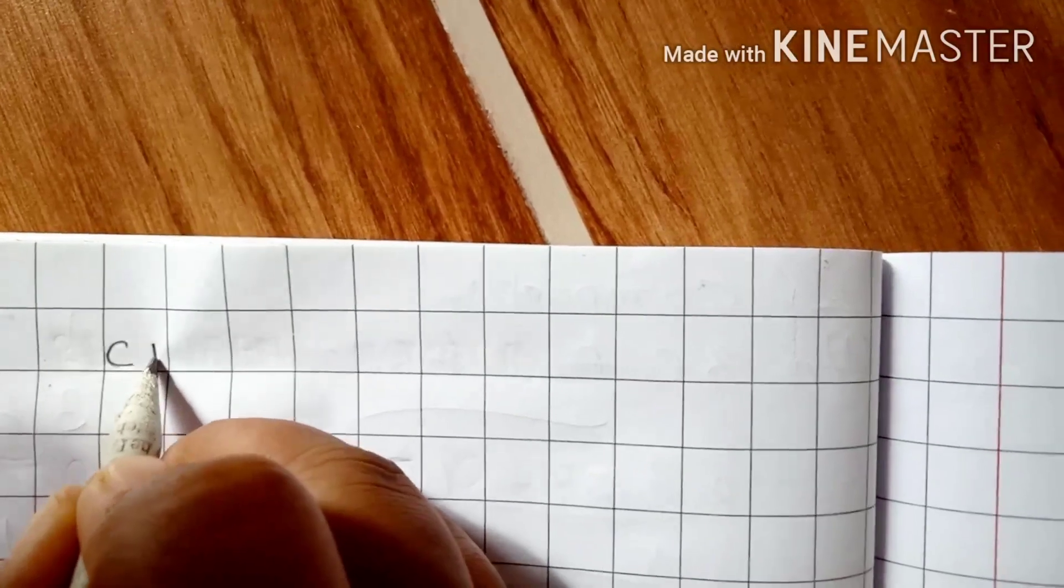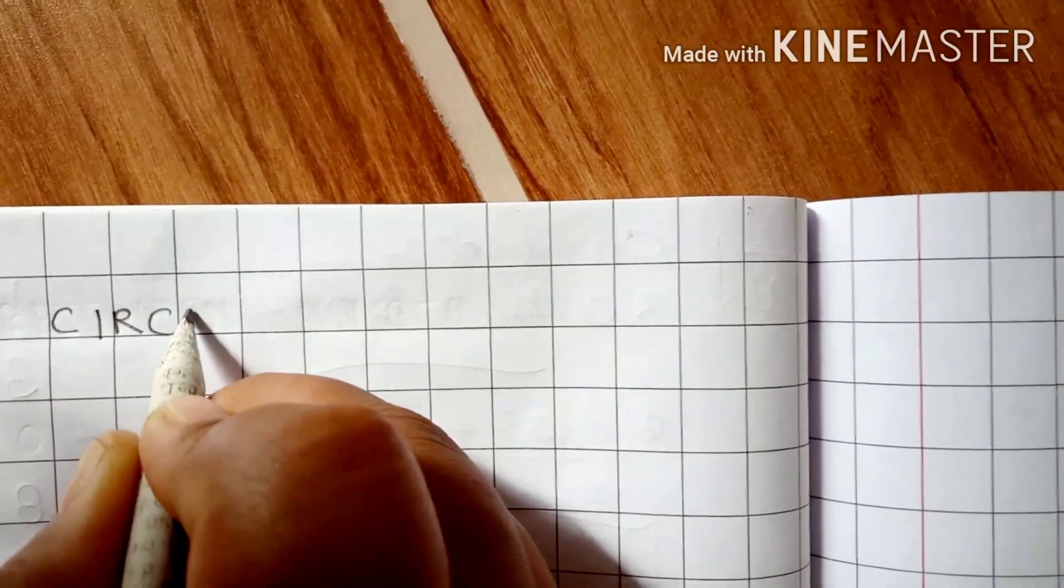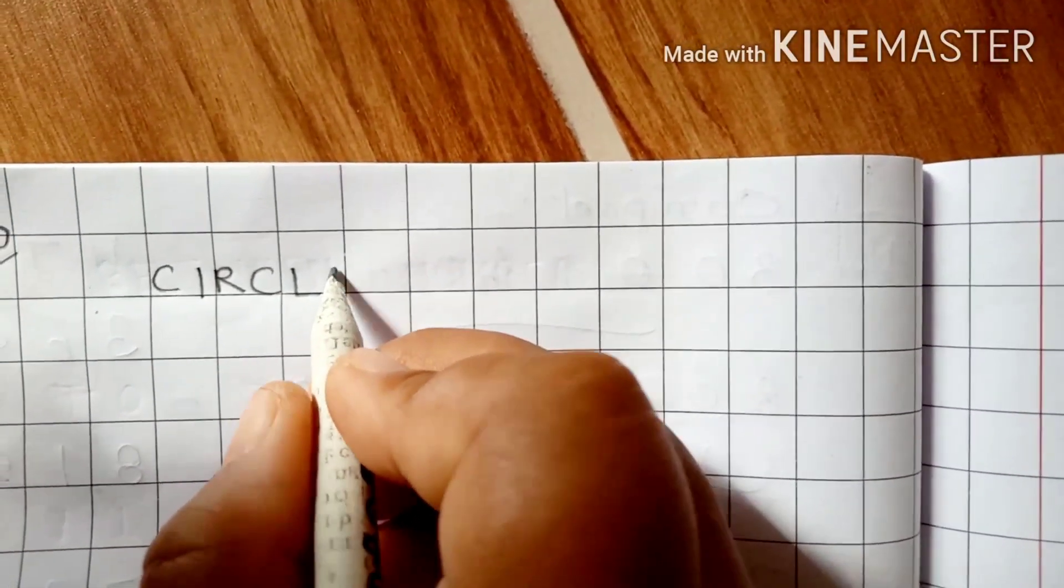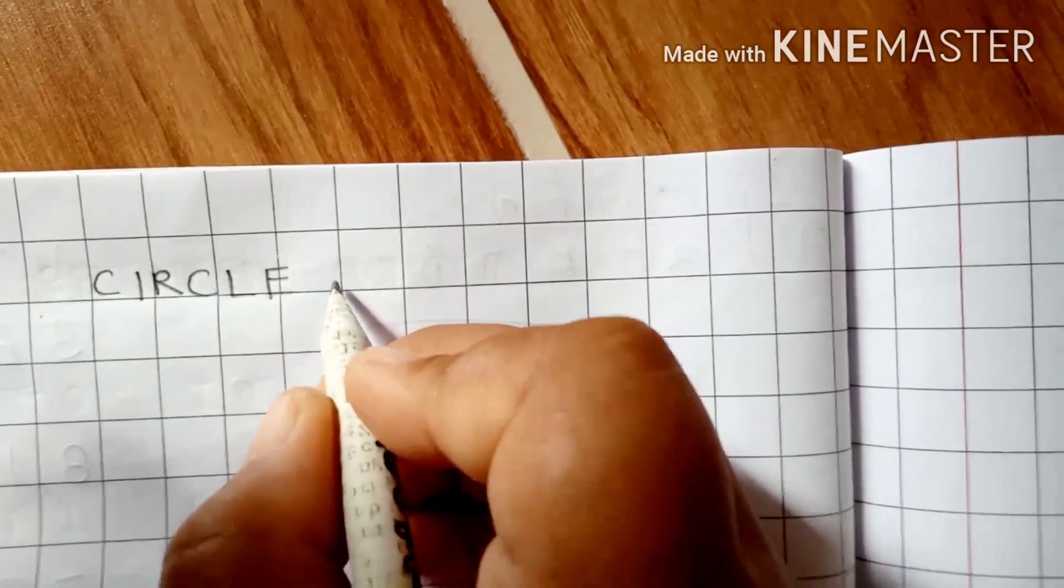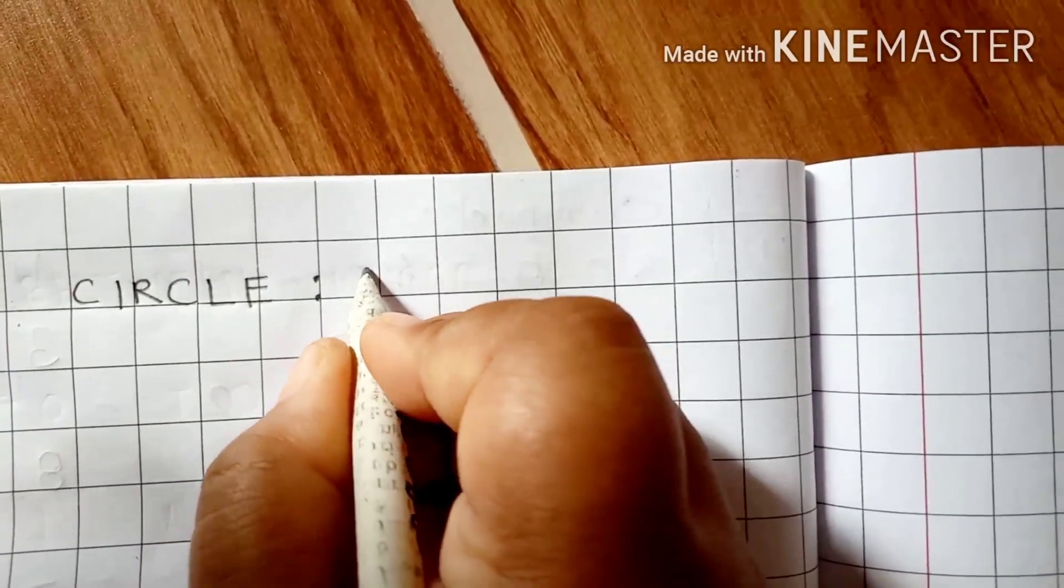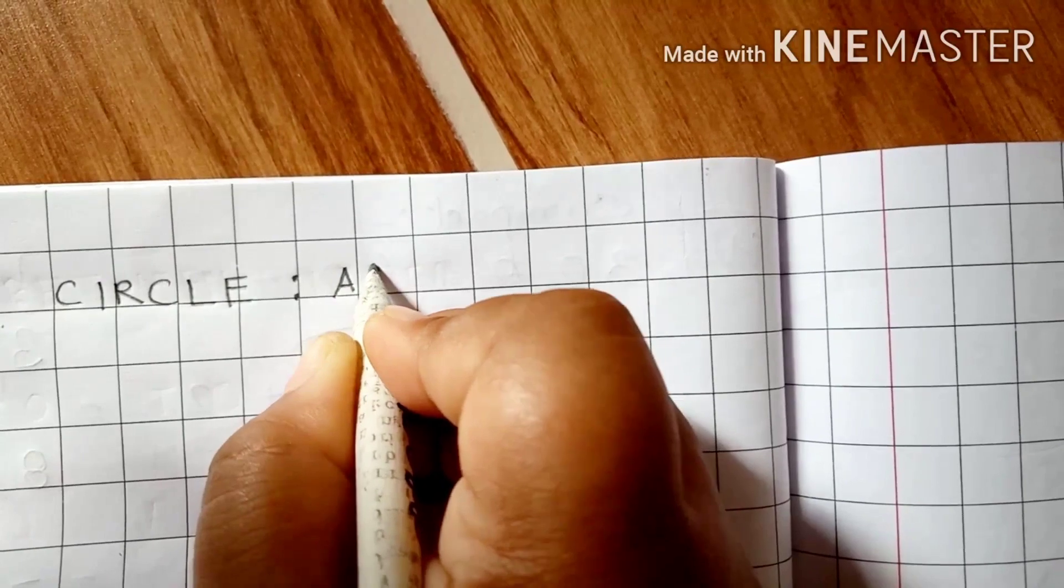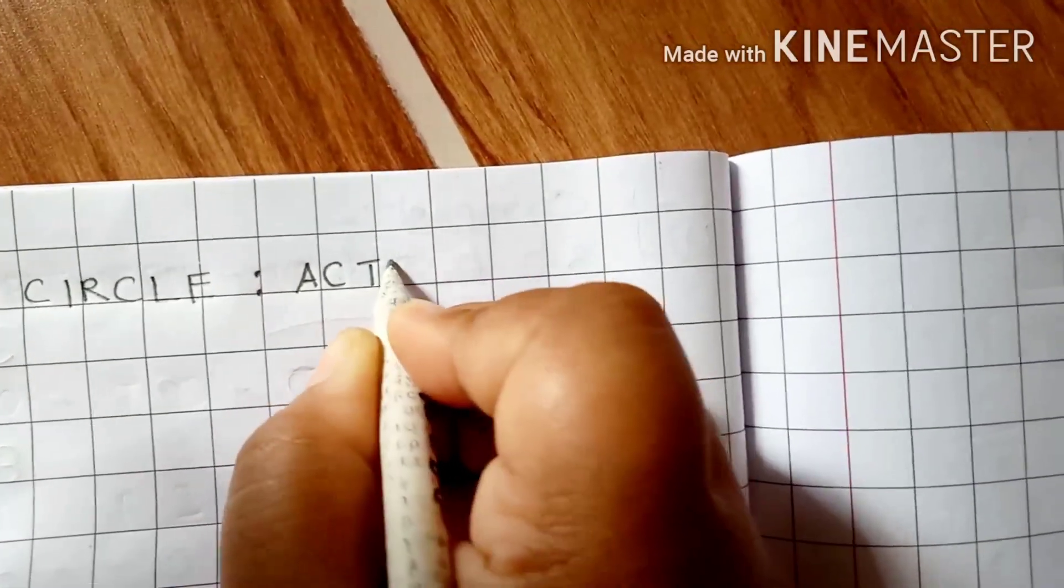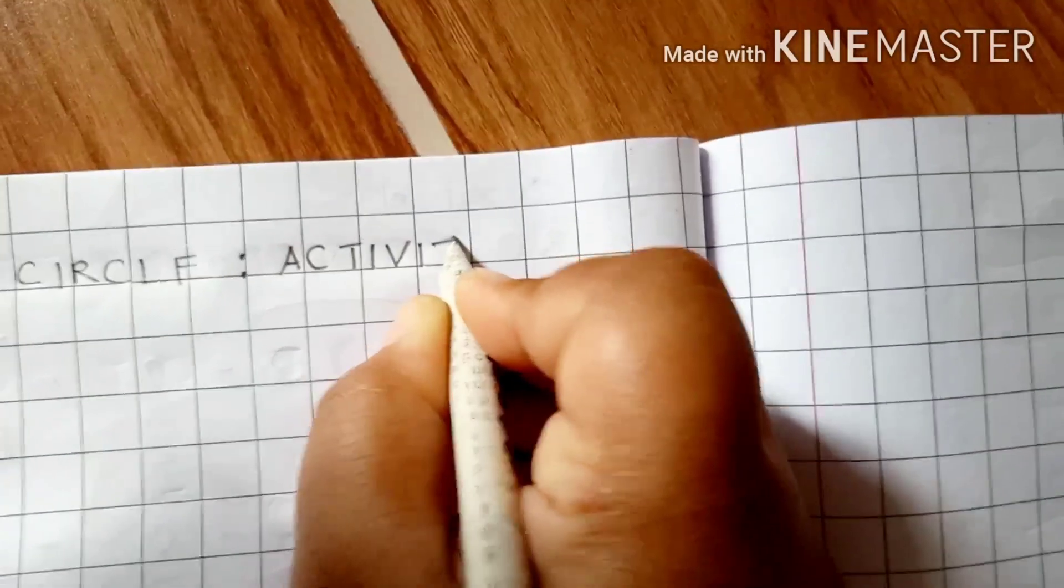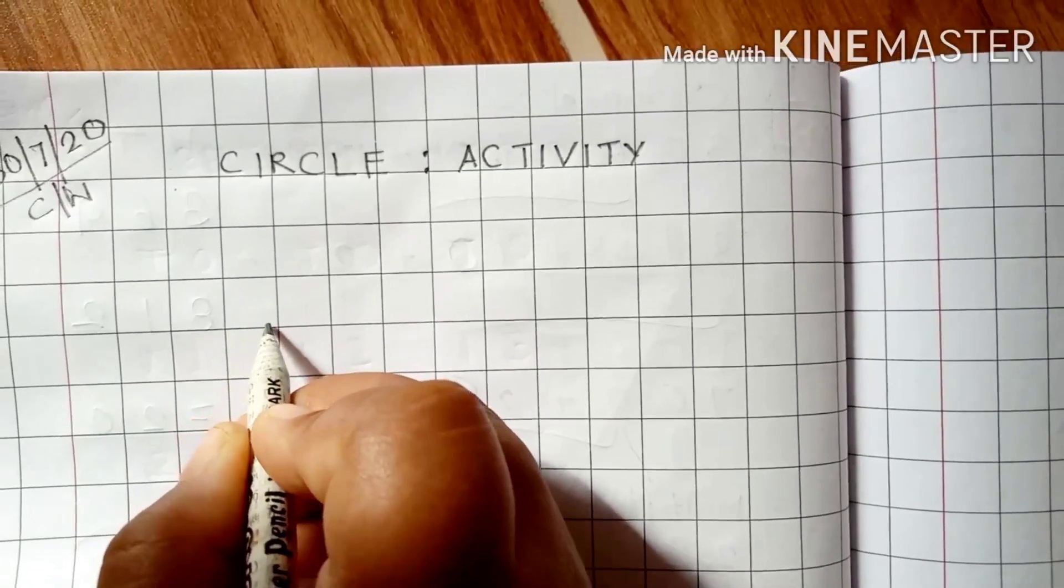So, now we will give the heading, that is, C-I-R-C-L-E, circle. Give two dots. Then, write here, activity, A-C-T-I-V-I-T-Y, circle activity.